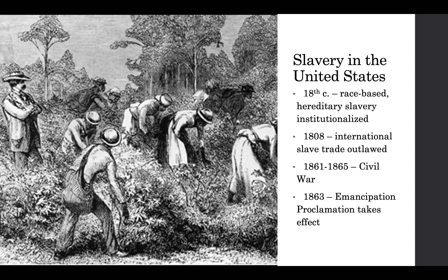In 1808, the international slave trade was actually outlawed, meaning that the practice of importing people from Africa or from other European colonies stopped. It was thought by some abolitionists that this might help bring about the death of slavery as an institution—if you could no longer import people, the supply of enslaved people would diminish. But by that point, the population of enslaved people had actually become self-sustaining, and so from that point on the slave trade in the U.S. was completely internal.